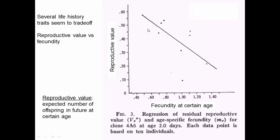Another plot uses slightly different variables, also showing fecundity at a certain age on one axis, and reproductive value on the other. Reproductive value is the expected number of offspring an individual will have in the future from its current age — not taking into account past reproduction, only future. The data show that having more offspring in the present causes an individual to have fewer offspring in the future, and having fewer in the present is related to having more in the future.